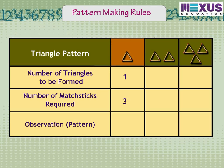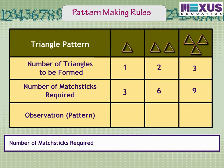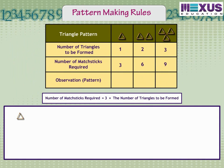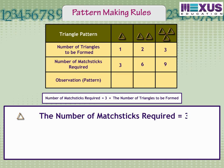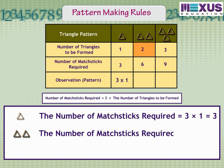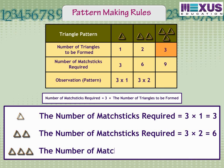To make a triangle, three matchsticks are used. If we want to make two triangles, then we need six matchsticks, and for three triangles, we need nine matchsticks. The rule is: number of matchsticks required is equal to three times the number of triangles to be formed. For one triangle, it equals three times one, equal to three. For two triangles, three times two, equal to six. For three triangles, three times three, equal to nine.